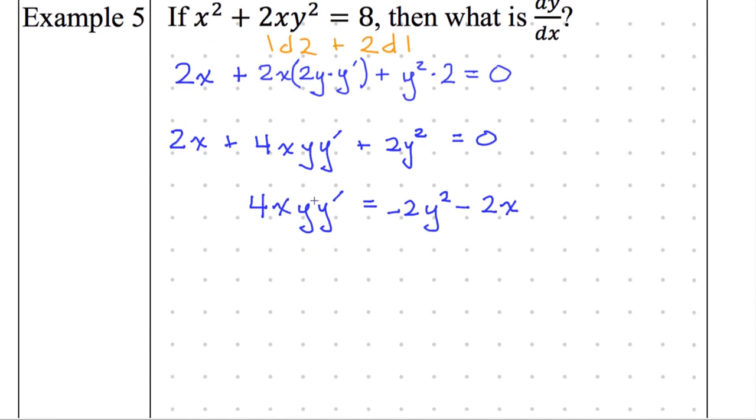And then from there, I just need to undo this multiplication of 4xy. So I'm going to divide both sides by 4xy and I'm going to get y prime by itself, which is going to be that same thing on the right, -2y squared minus 2x, but all of that divided by 4xy. And there I have it. There's dy/dx.